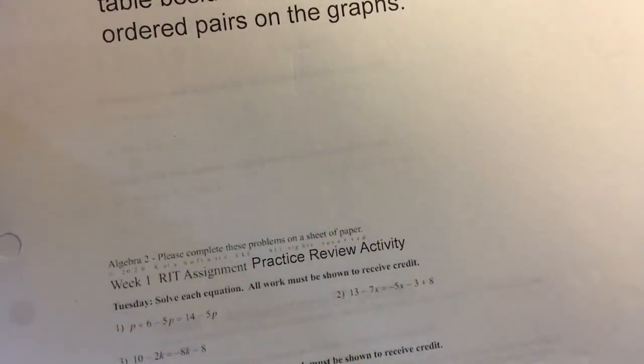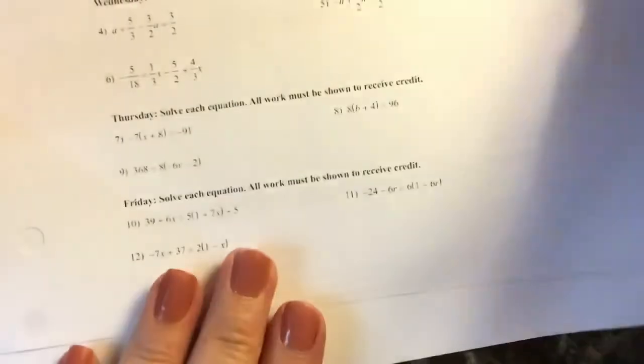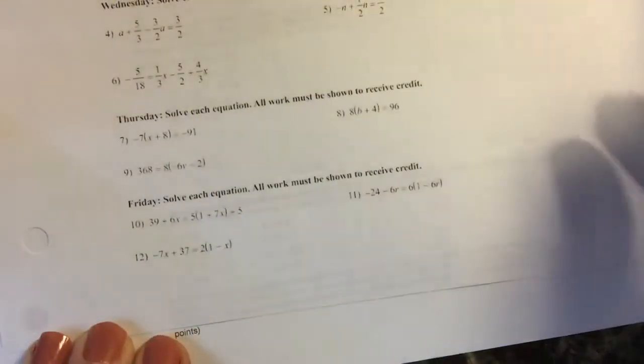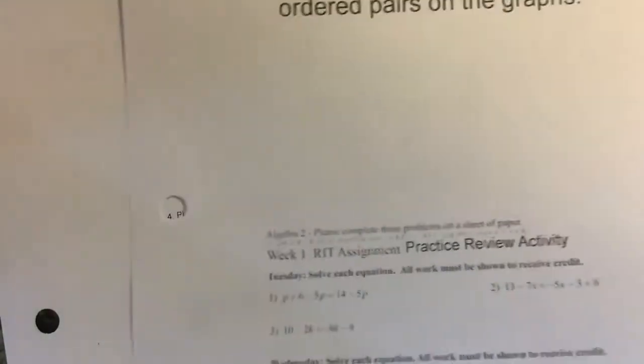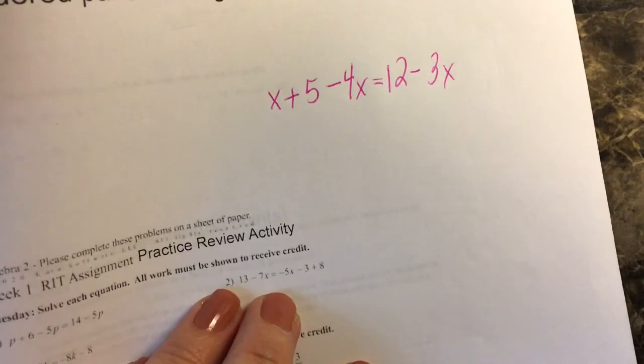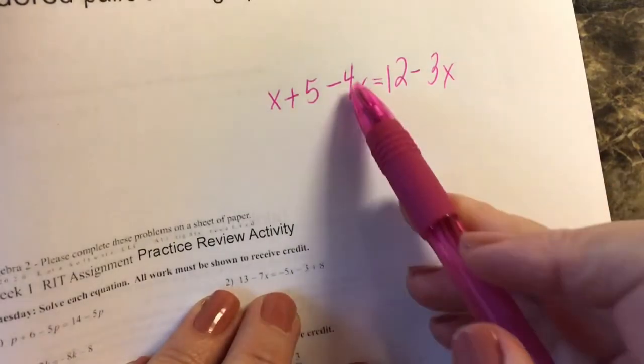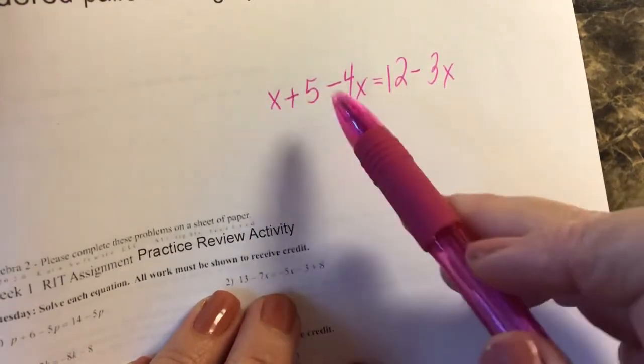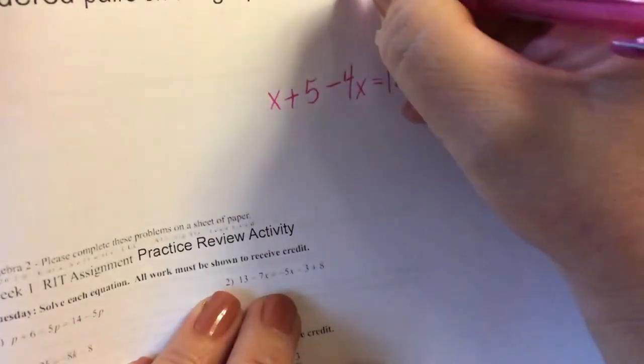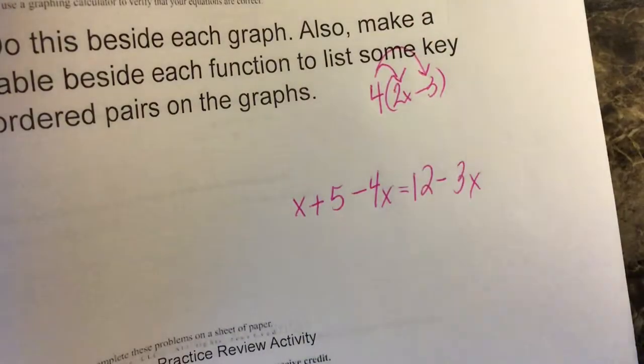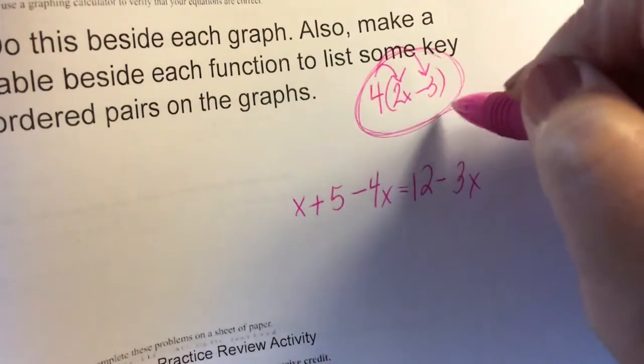What you're going to do next is complete this practice for solving equations. You have Tuesday, Wednesday, Thursday, Friday practice solving equations. I can solve an equation really quick to remind you how to do it. When solving an equation you're going to want to combine like terms on the left or the right if you need to. You're going to want to also get rid of parentheses if you need to by distributing. Remember when you have something that looks like this, you distribute 4 times 2x and 4 times negative 3.